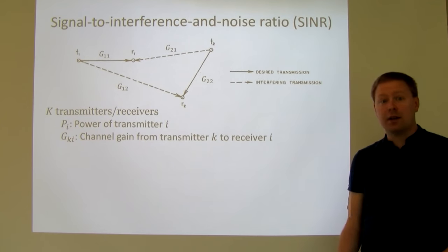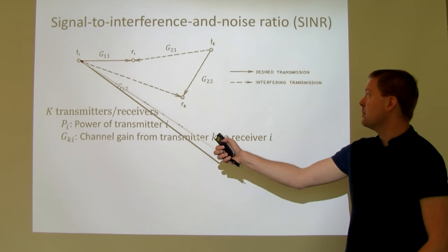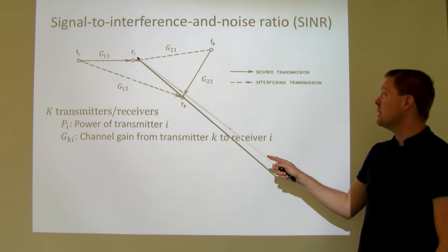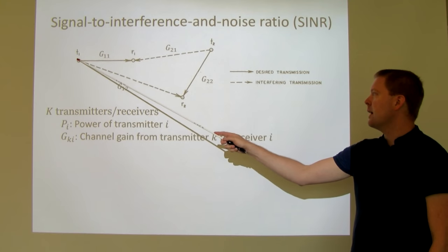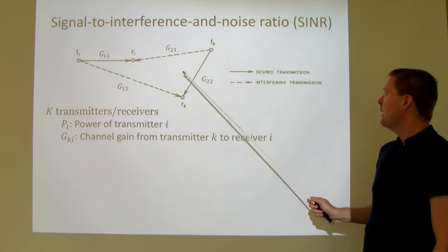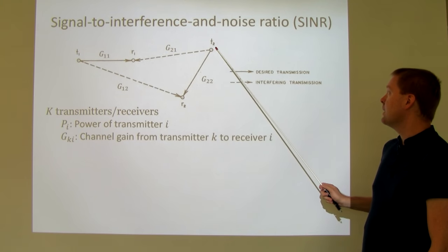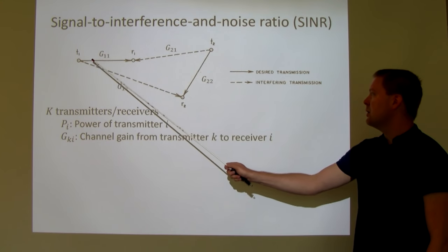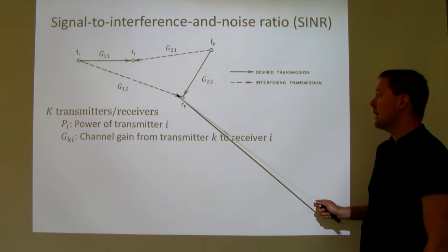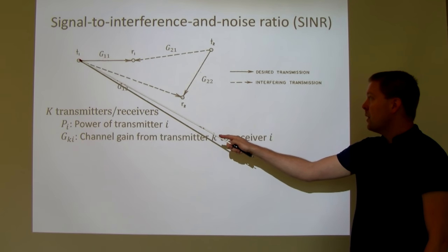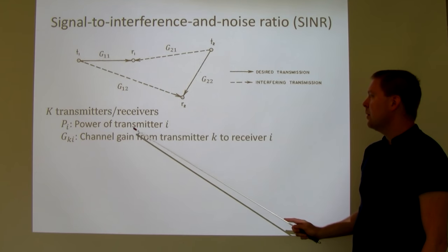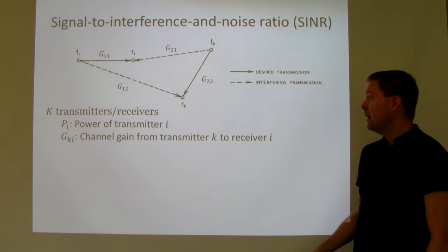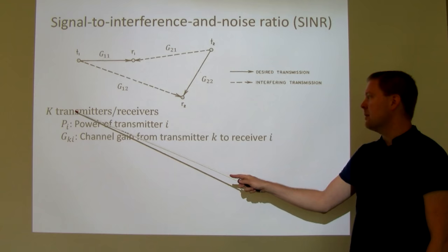A classical way of modeling this is to say we have a certain number of transmitters — T1, T2 — and these are communicating with one receiver each. Receiver 1 is the desired receiver for transmitter 1 and receiver 2 is the desired destination for transmitter 2. However, there are dashed interfering transmissions happening at the same time. In general, with K transmitters and receivers, PI is the power used for transmitter TI.